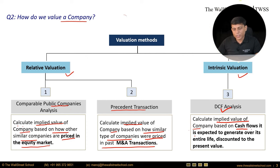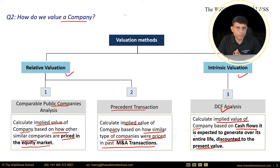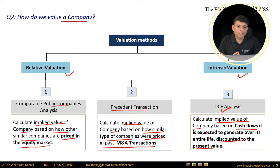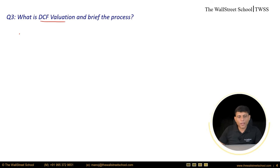Under DCF valuation, we calculate the implied value of the company based on its projected cash flows discounted to present value. We first need to project the future cash flows of the business and then discount those cash flows to the present value. This is how we can explain the different methods of valuation of a company.